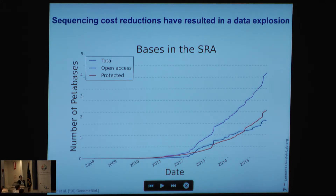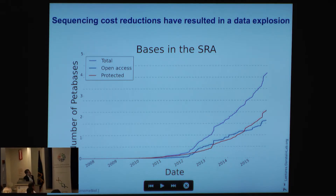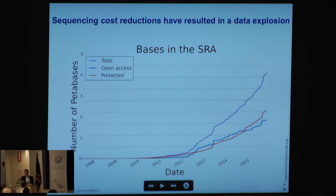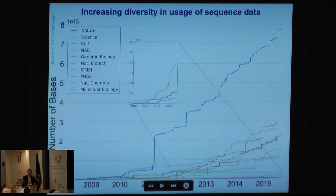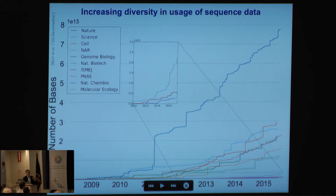Another result of the exponential scaling of data generation is a huge increase in the size of what we're storing in databases. This is a plot of the number of petabases stored in the Sequence Read Archive. What I'm particularly interested in is not just that we're piling up all these bases, but how ideas are diffusing through the community, how our real intellectual output is scaling.